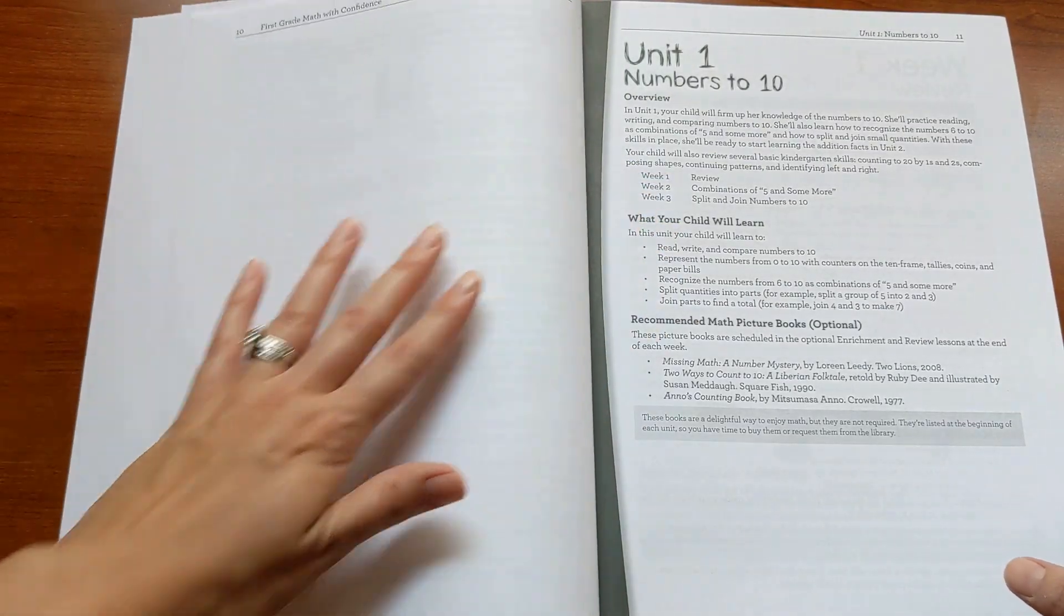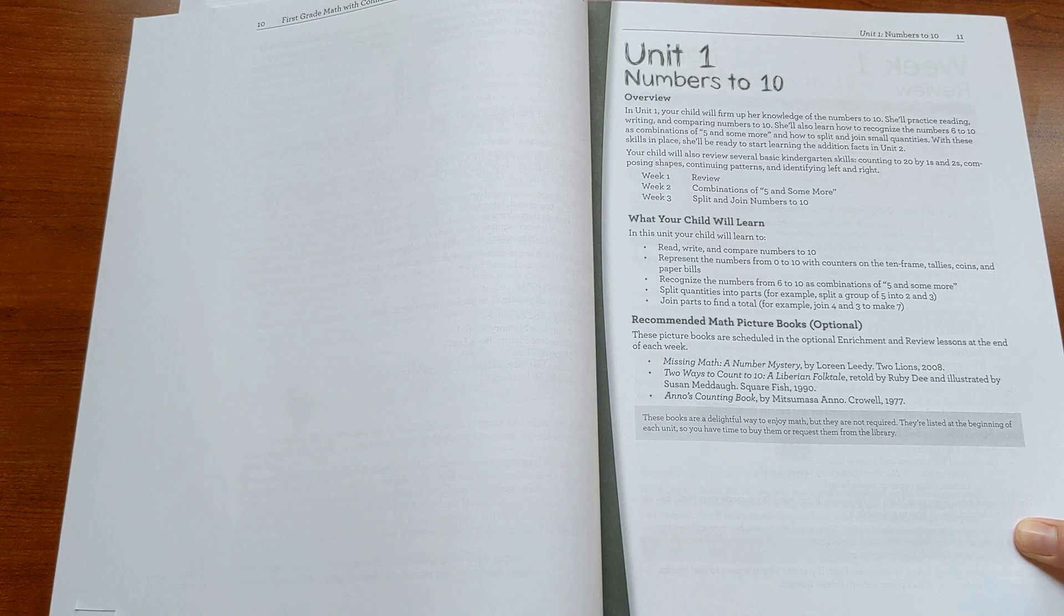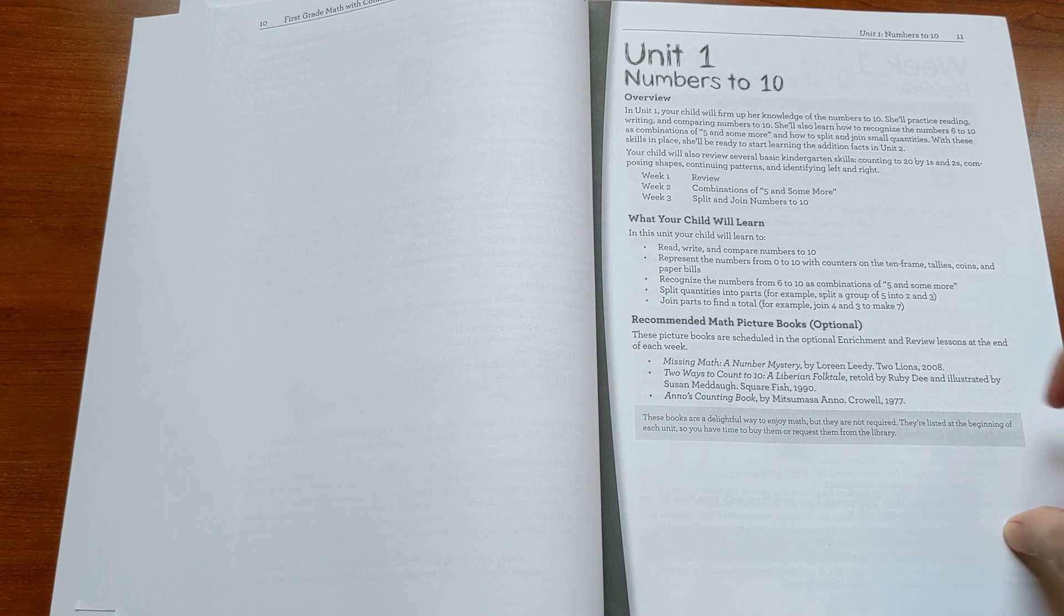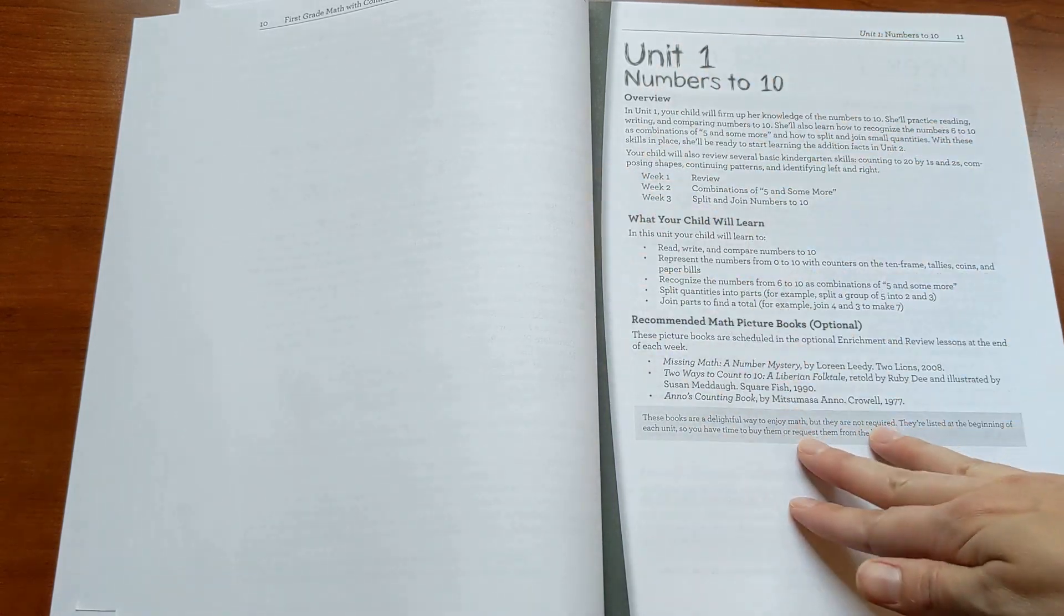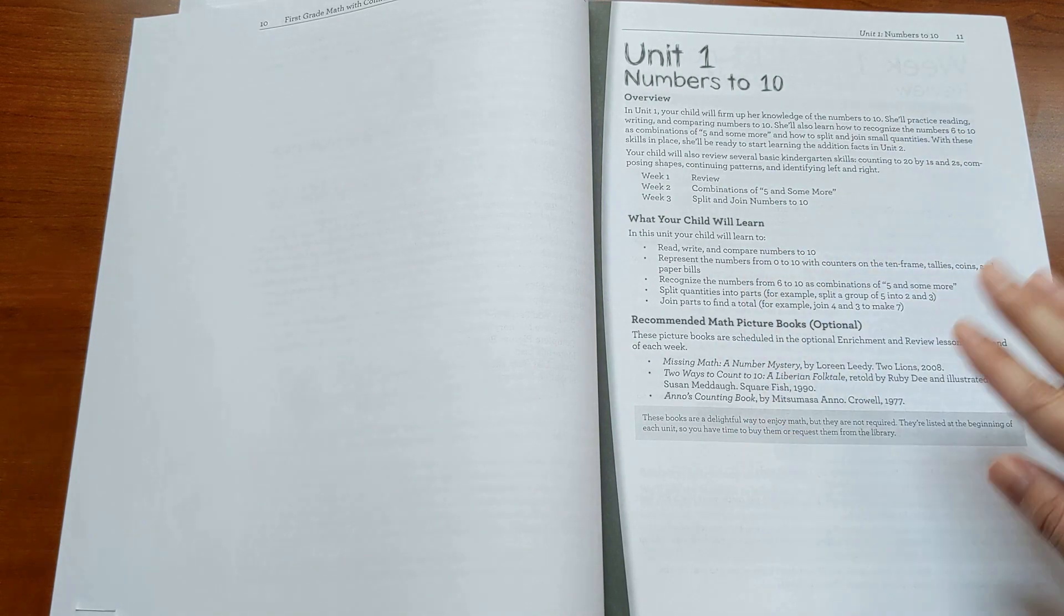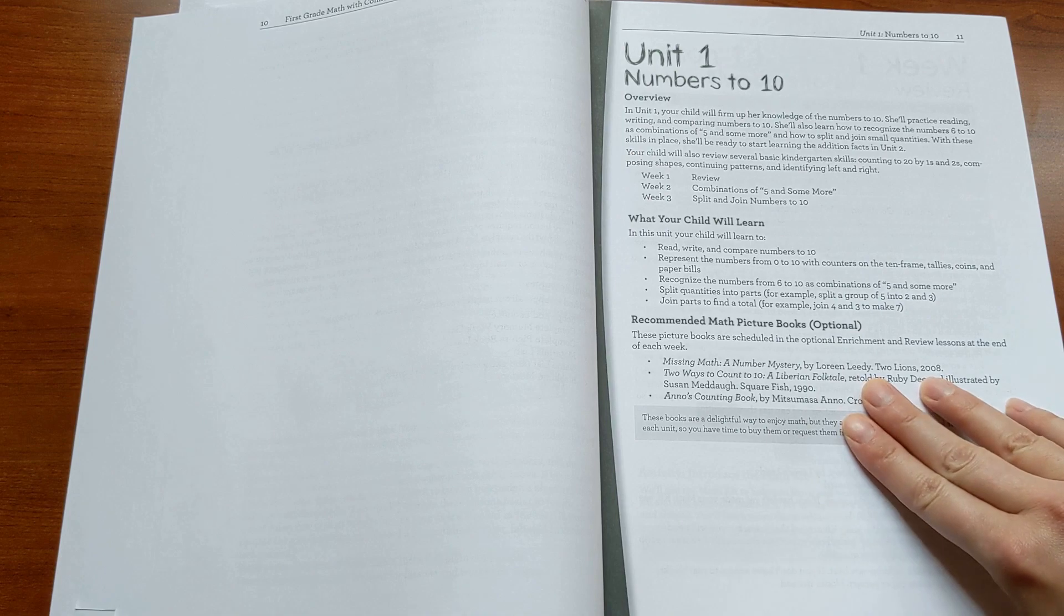So here's unit one, the numbers to 10. Of course your first grader already knows a lot about the numbers to 10, but in here you really set a solid foundation for learning the addition and subtraction facts throughout the year. The unit overview gives an overview of the unit, what your child will learn, as well as the recommended math picture books that you can use in the enrichment lessons if you would like.